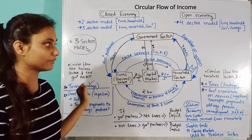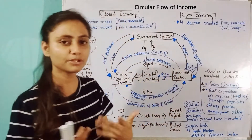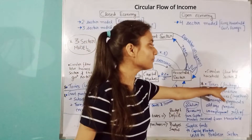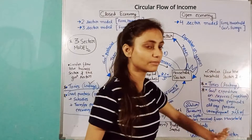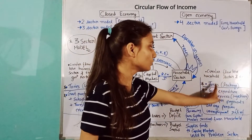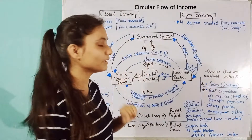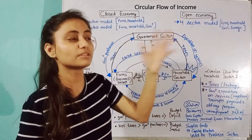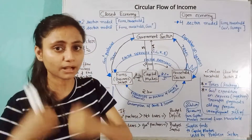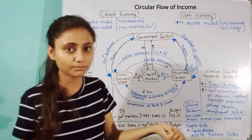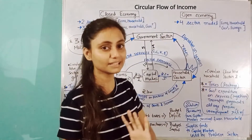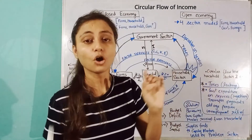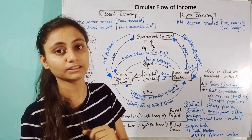Similarly, there is a circular flow between the household sector and the government sector. When the government takes taxes from the household sector — like personal income tax — it causes leakage. Income is taken from people's hands, which reduces their demand for goods and services. If demand falls, the producer sector reduces production, and production activity contracts. So taxes cause leakage and outflow of income from the economy.